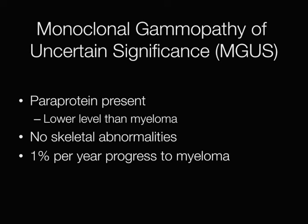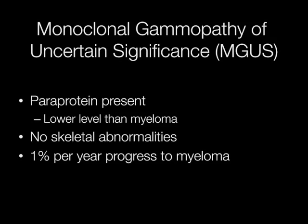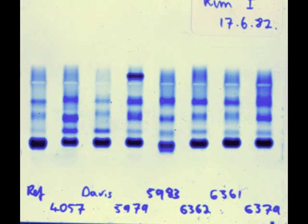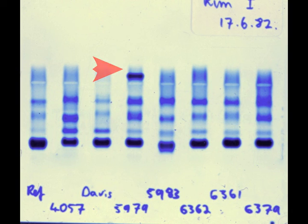Another condition that can cause confusion is when a paraprotein is present but at levels lower than in myeloma, with no skeletal abnormalities. This is called monoclonal gammopathy of uncertain significance, or MGUS. One percent of people with MGUS per year progress to develop myeloma. A personal research example of a serum electrophoresis gel demonstrated an abnormal paraprotein band in a subject who was subsequently investigated for myeloma but did not meet the diagnostic criteria — a good example of MGUS.